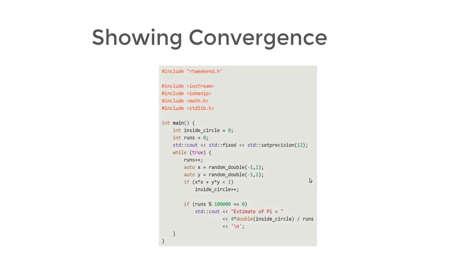Here is another modified version of the previous code where we show convergence of our pi by running the previous algorithm in an infinite loop. For every 100,000 points, we will show our current estimation of pi. We keep running this algorithm with more and more samples to refine the result, so our estimation of pi will be more and more precise.